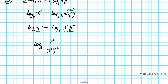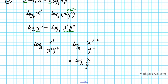Using the reverse of the quotient property, we have log base 2 of x to the third divided by (x squared times y to the sixth). To simplify, we subtract the lower exponent from the higher: x to the (3 minus 2) over y to the sixth. That gives us log base 2 of x over y to the sixth — the condensed form of the original expression.